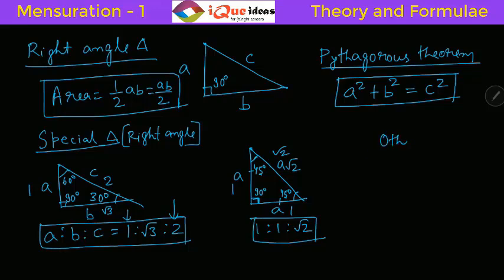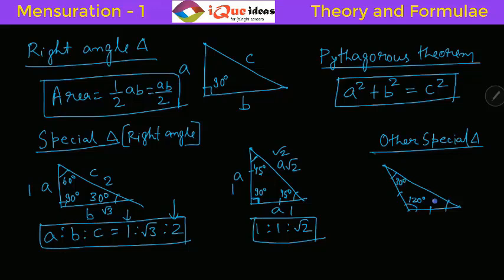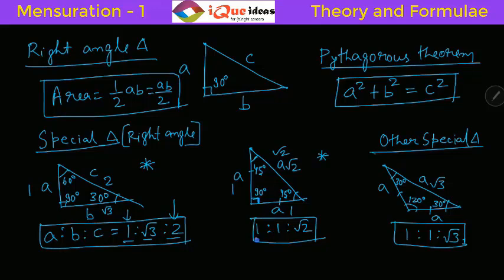There is one other special triangle worth remembering: an isosceles obtuse angle triangle. If the obtuse angle is 120 degrees and the two equal sides are A, the remaining two angles are each 30 degrees. In this case the third side is A root 3, so the ratio of sides is 1 to 1 to root 3. To summarize all three special triangles: 30-60-90 gives ratio 1 to root 3 to 2; 45-45-90 gives ratio 1 to 1 to root 2; and 30-30-120 gives ratio 1 to 1 to root 3.